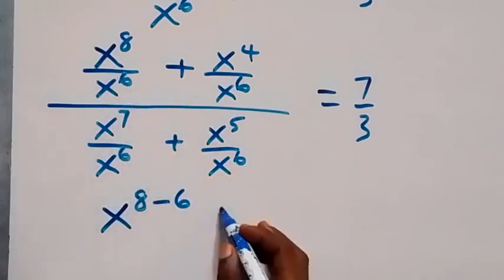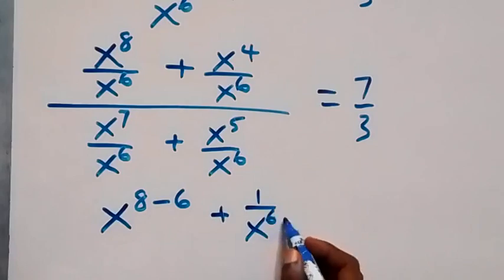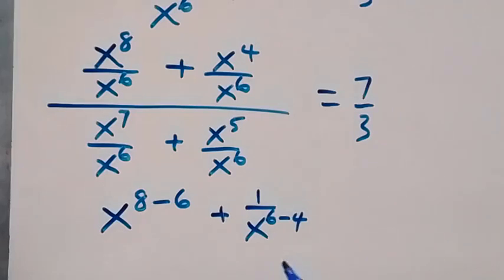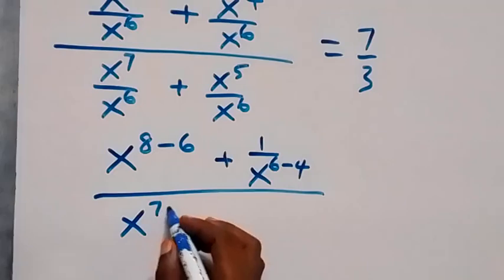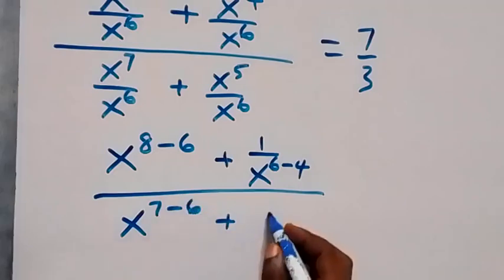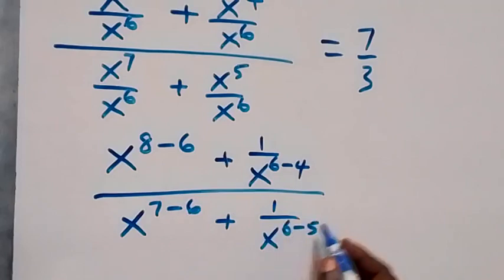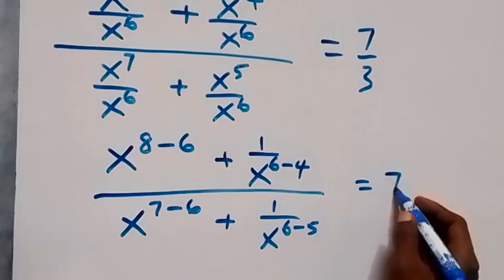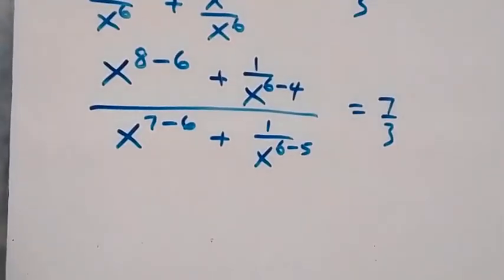Since they divide and have the same base, you can subtract the powers. So we also have plus 1 over x raised to power 6 minus 4, divided by x raised to power 7 minus 6, plus 1 over x raised to power 6 minus 5, which equals to 7 over 3.